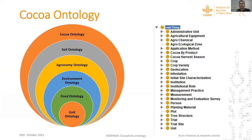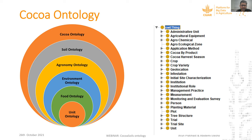We did not want to build something completely new — our aim is to build on existing ontologies. The COCOA ontology is complementary and co-designed with existing ontologies. We incorporate parts of the Unit Ontology, Food Ontology, Environmental Ontology, and the Agronomy Ontology developed by SIGA. We are in rigorous discussion with these groups, who helped us refine and develop our ontology and are closely involved in the whole development process.